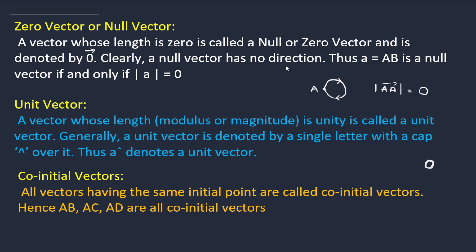A null vector has no direction, since the magnitude is zero. The starting and ending point are the same, or the line segment has zero distance. For example, if acceleration is zero, that is also a null vector. Thus a vector equals AB̄ is a null vector if and only if its magnitude is zero.